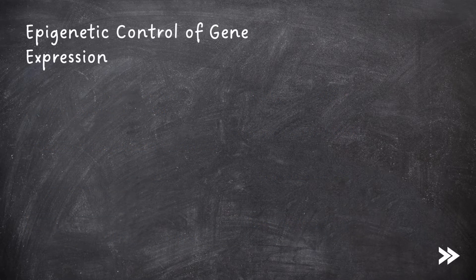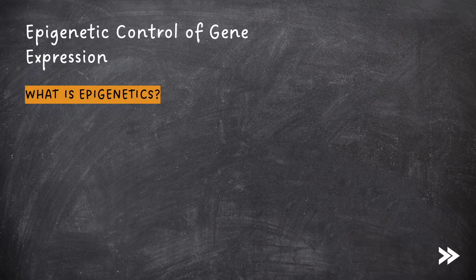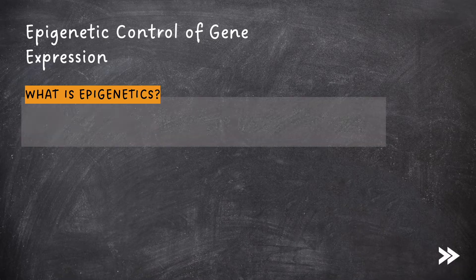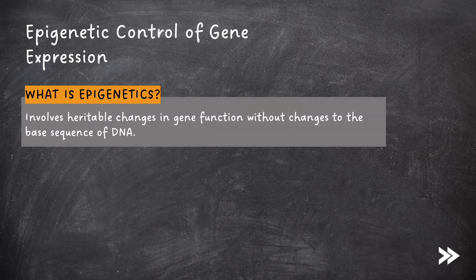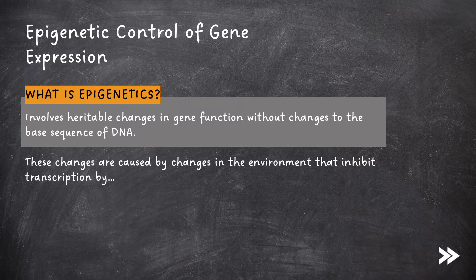Next, we need to know about epigenetic control of gene expression. First of all, what is epigenetics? Epigenetics involves heritable changes in gene function without changes to the base sequence of DNA. These changes are caused by changes in the environment that inhibit transcription by two main factors: increased methylation of DNA, and decreased acetylation of histones.